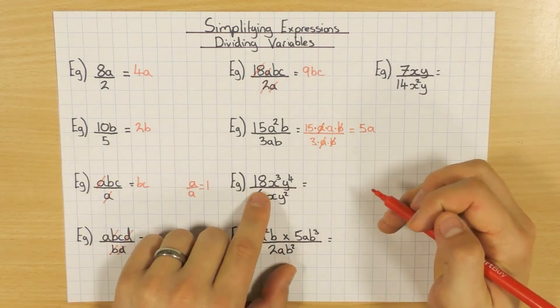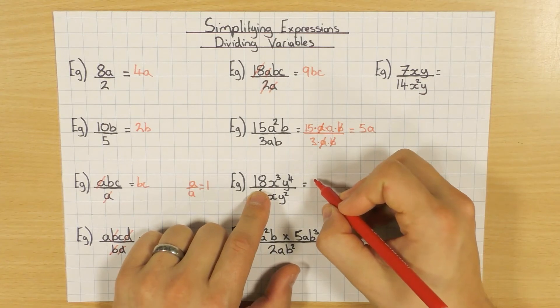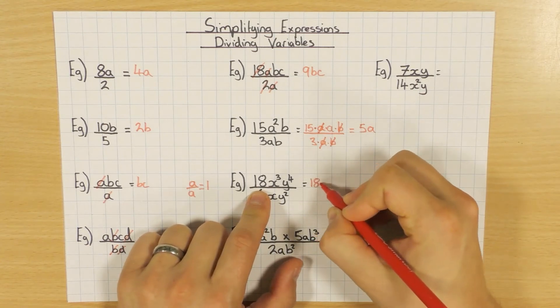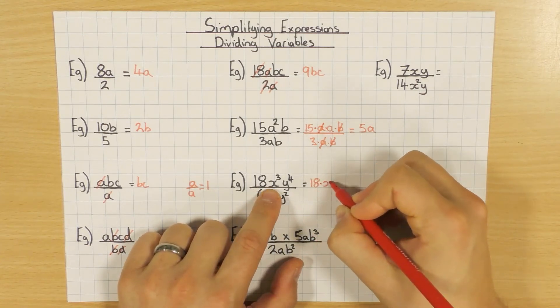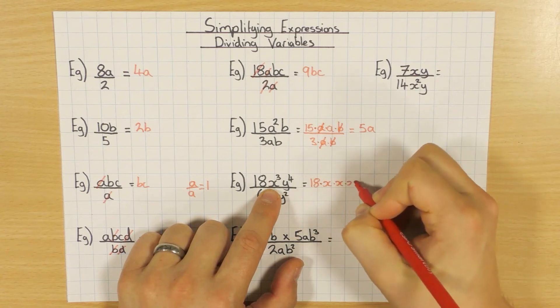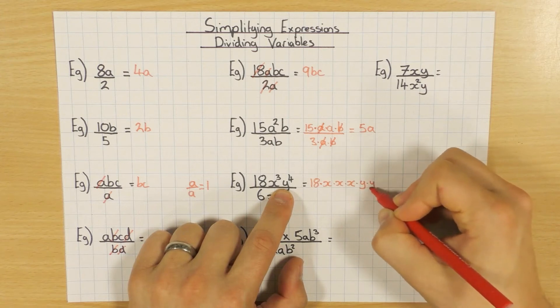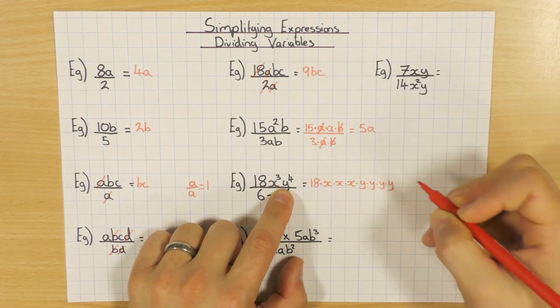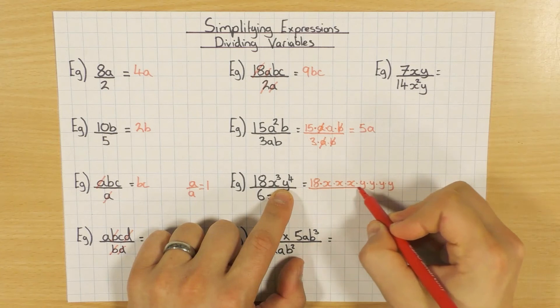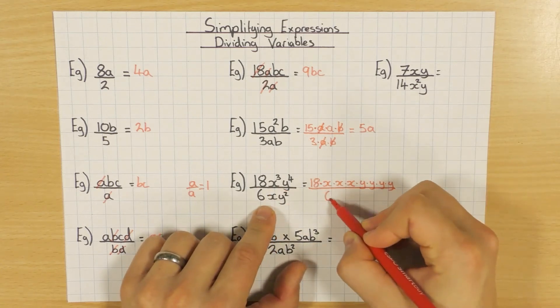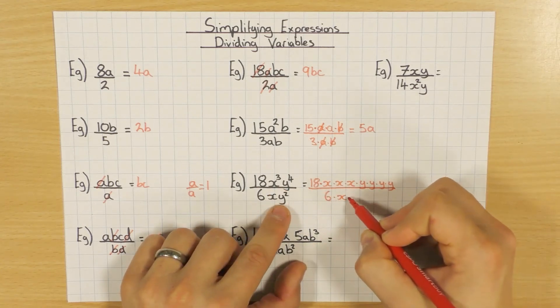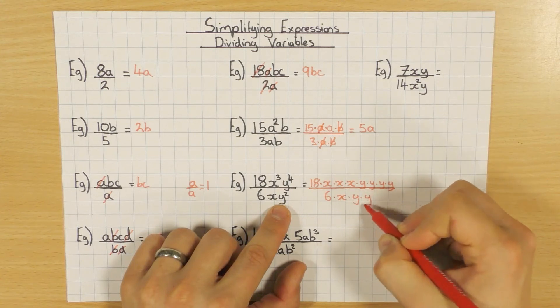Same thing here. Lots going on. So let's expand it out and see what we've got. So 18 times x cubed, so that's x times x times x, so I've got 3 of them. Y to the power of 4, so that's y times y times y times y, so I've got 4 of them. That's all being divided by 6 times x, and then y squared, so y times y.